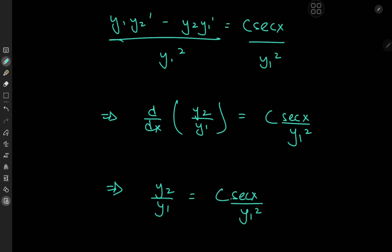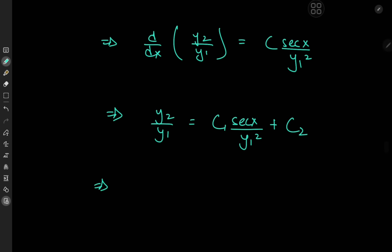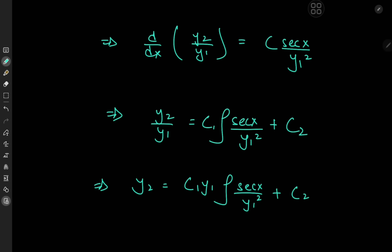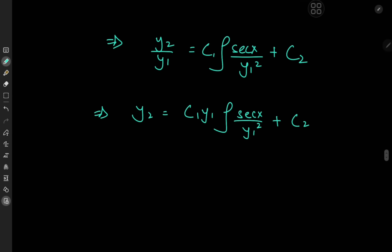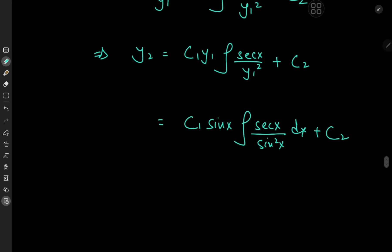So we have the derivative of y2 over y1 equal to C times secant x divided by y1 squared, which is known to us. On integration, we have y2 divided by y1 equal to C sub one times the integral of secant x divided by y1 squared dx, plus a constant of integration C sub two. This means y2 equals C sub one times y1 times the integral of secant x divided by y1 squared dx, plus C sub two. Since y1 is sine x, that's C sub one times sine x times the integral of secant x divided by sine squared x dx, plus C sub two.